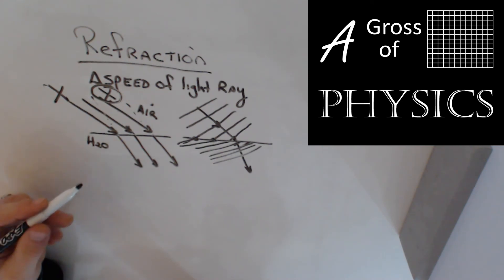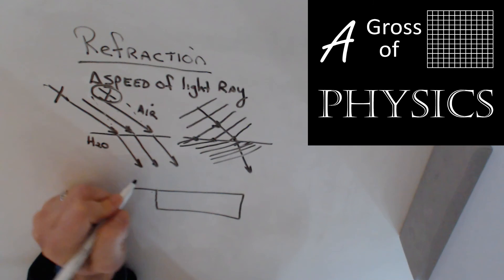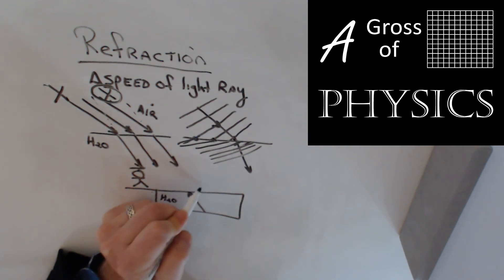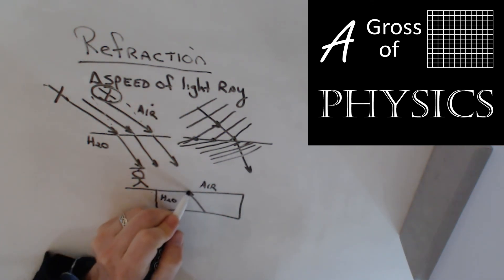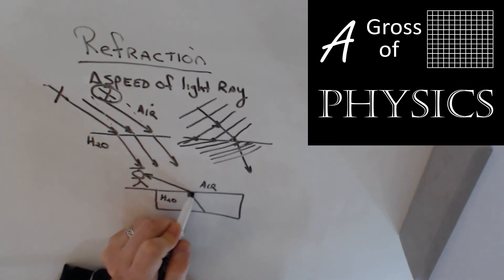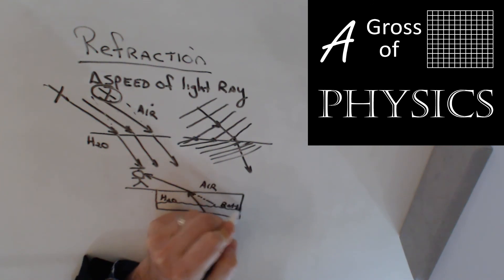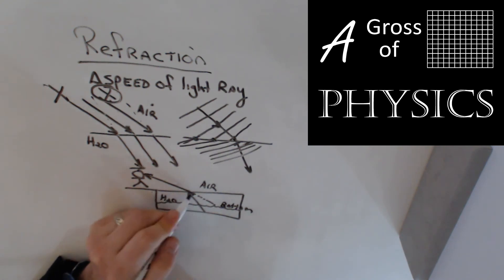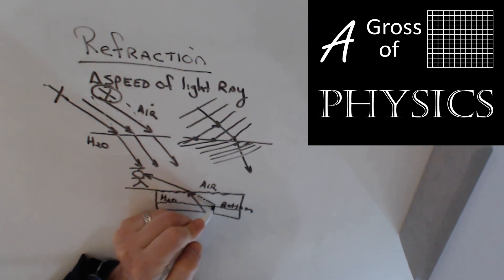This is why pools look more shallow than they really are when you're standing on a deck. Light traveling from the bottom of the pool escapes into air — going from water into air, it speeds up. When those wavefronts speed up, they rotate outward. Your brain extends the line backward and you think the bottom of the pool is higher than it really is. So the pool appears more shallow. The water line is up here, but the bottom of the pool will appear to be higher than it really is because the light changed speed entering the new material.